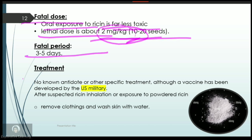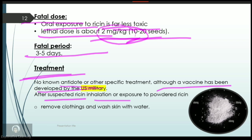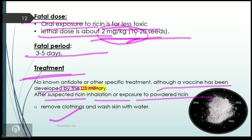Unfortunately, there is no specific antidote available for ricin poisoning, though a vaccine was developed by US military researchers. For suspected ricin inhalation or exposure to the powdered form, preliminary treatment includes removing the person's clothing and washing the skin with water before actual medical expert arrives.